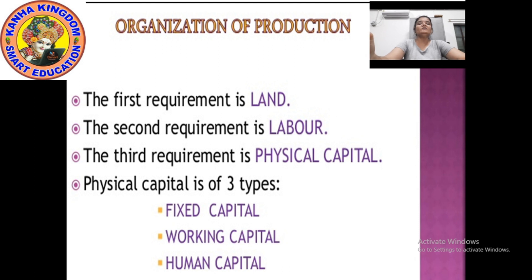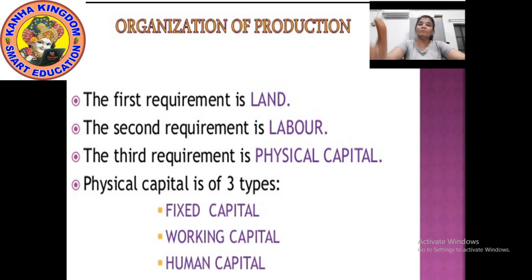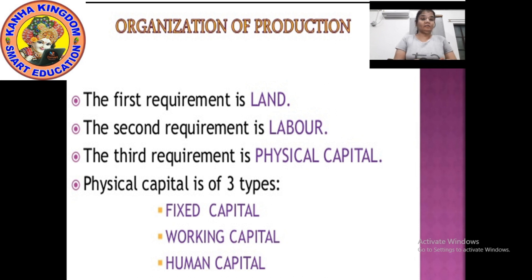The aim of production is to produce the goods and services that we want. There are four requirements: land, labor, and physical capital. The first requirement is land and other natural resources such as water, forest and minerals. If we only have the land, is our requirement going to be finished? No. With this we need water, raw materials, minerals — especially if we are doing non-farming activity.